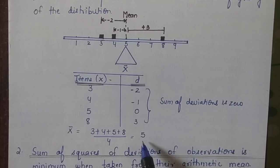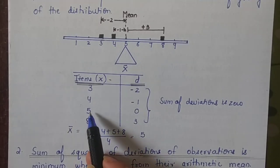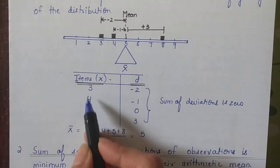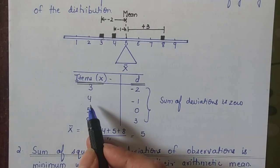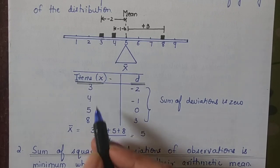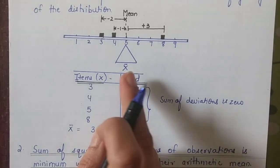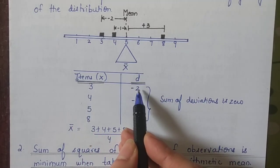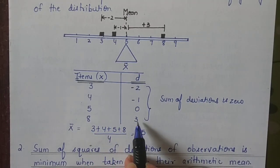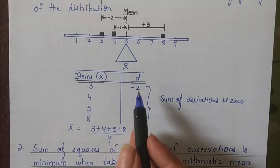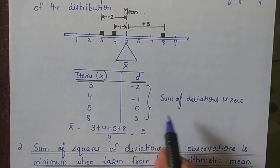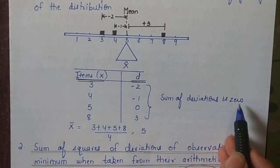So now if I am taking this mean, I am checking the deviations of all other observations from this mean. The deviations are 3 minus 5 is minus 2, 4 minus 5 is minus 1, 5 minus 5 is 0, and 8 minus 5 is positive 3. Now you can check if I total up these deviations: minus 2 plus minus 1 plus 3 is equal to 0.